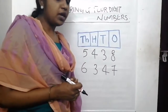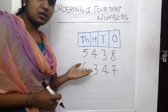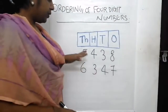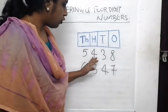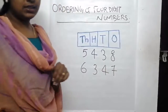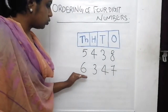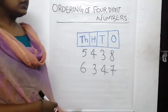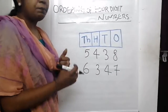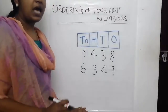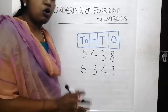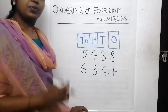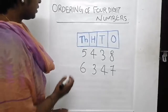Let's take two numbers. Can you read these numbers with me? 5,438. 6,347. Then we have to compare these two numbers and find which number is smallest. How can we find which number is smallest? Let's see.